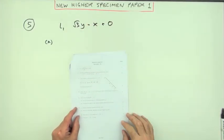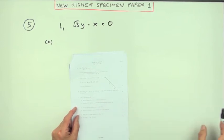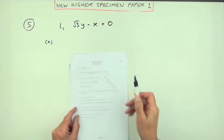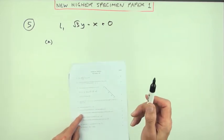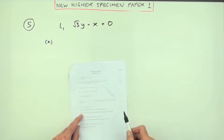Number five, from the new Higher specimen paper one. It's still four marks though on lines. Here's the equation of line one. Part A says there's another line, line two, that's perpendicular to it. For two marks, what's the gradient of line two?